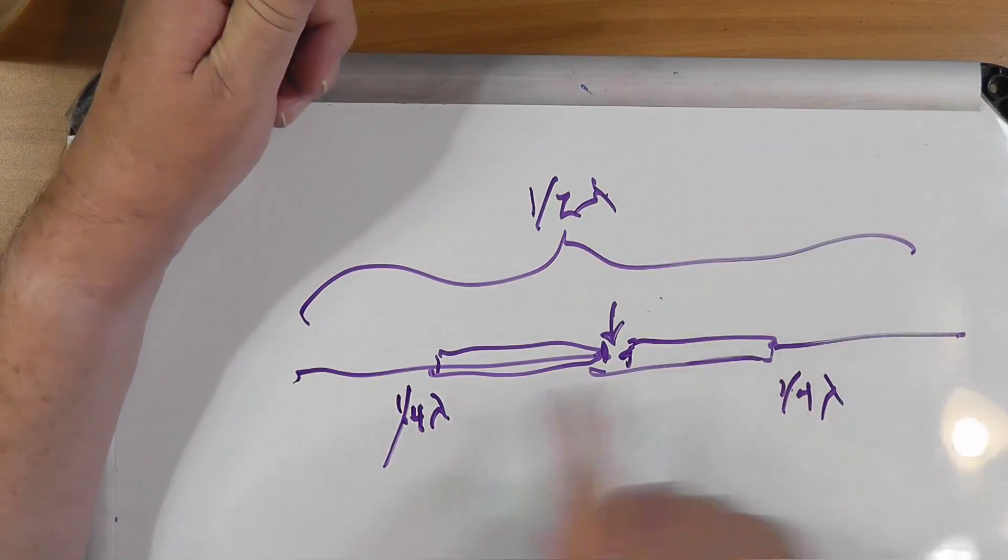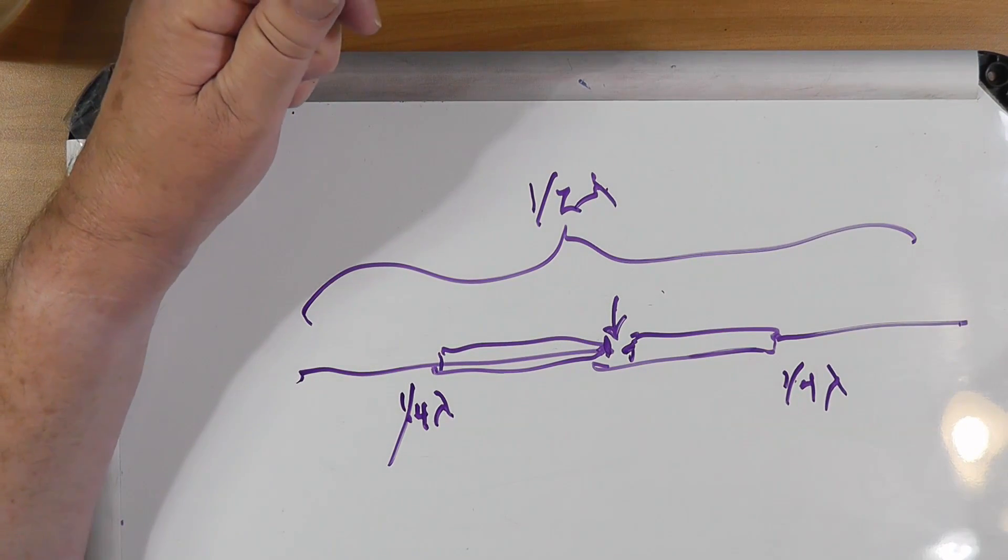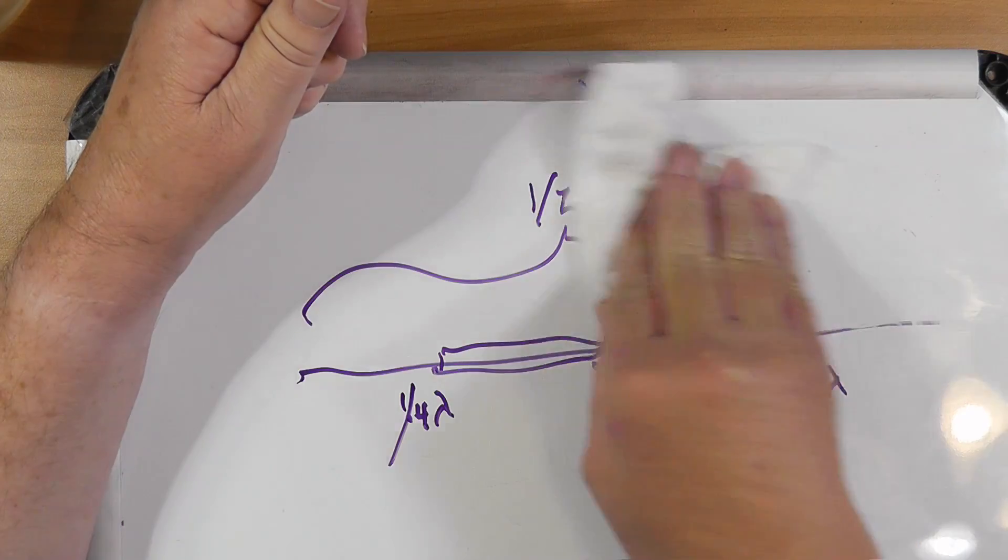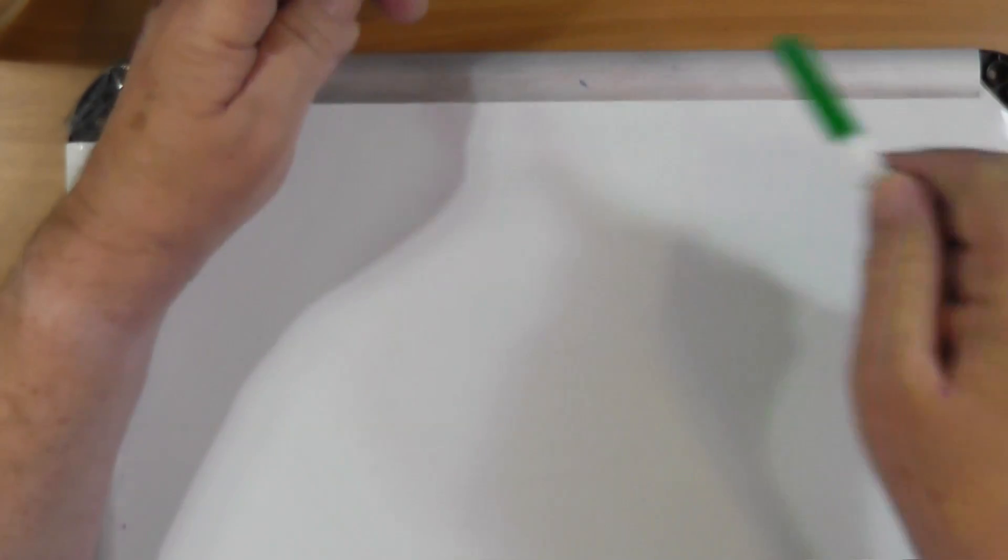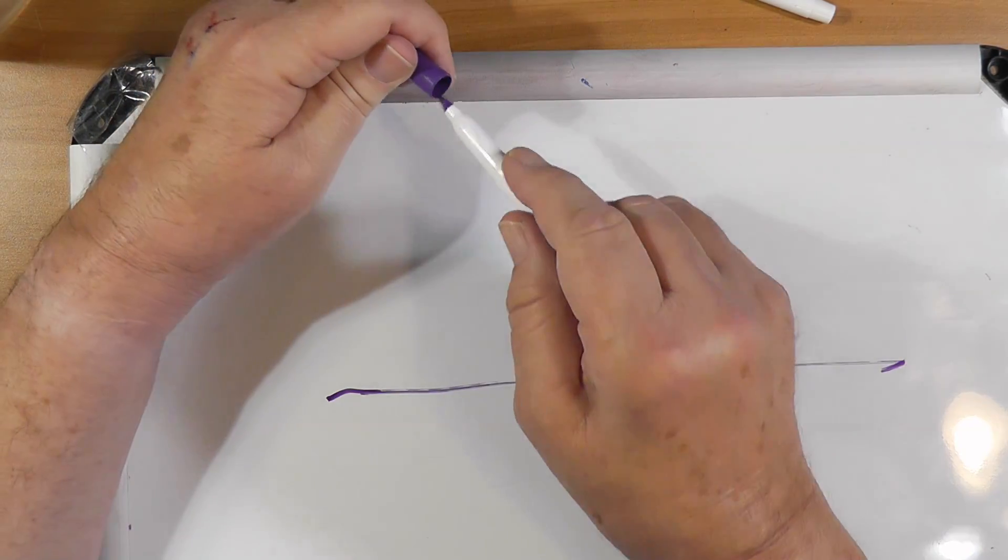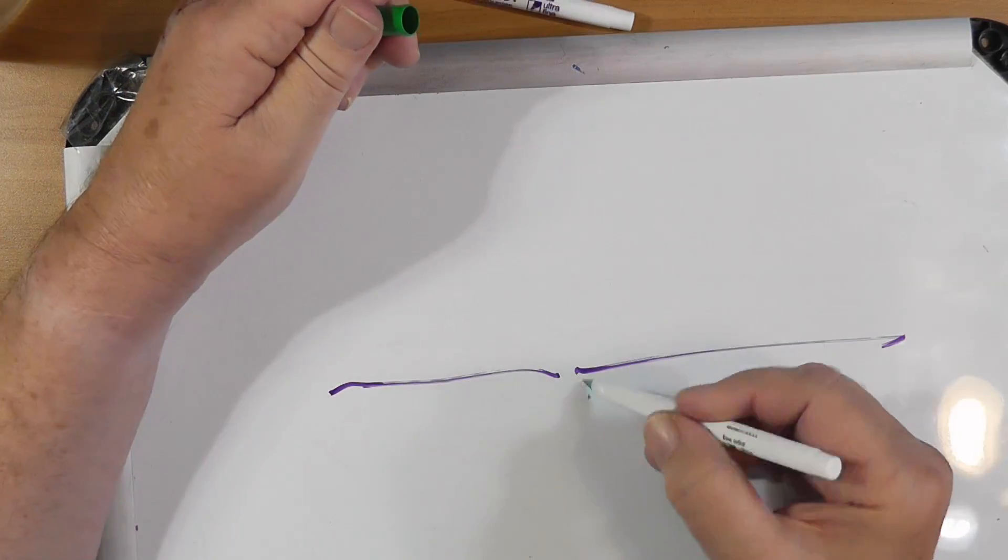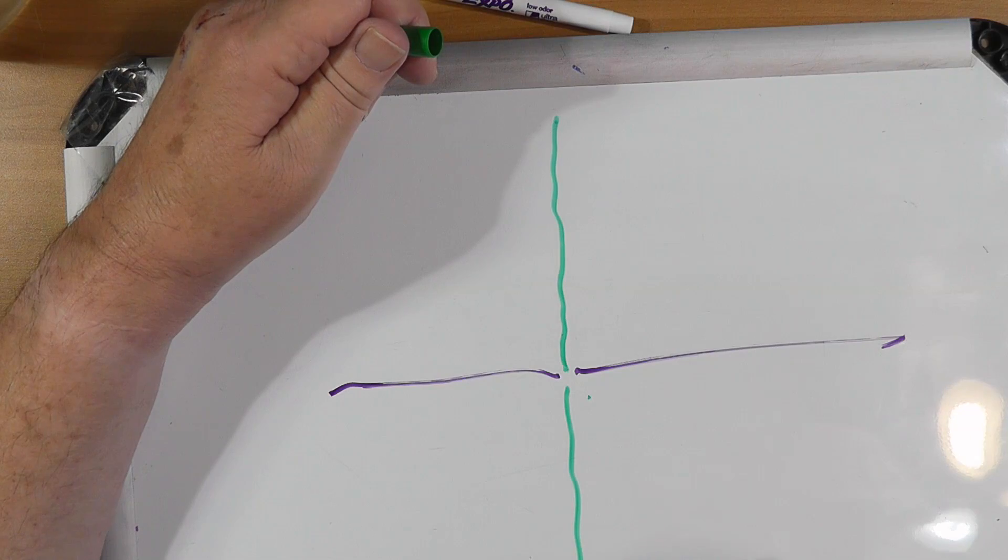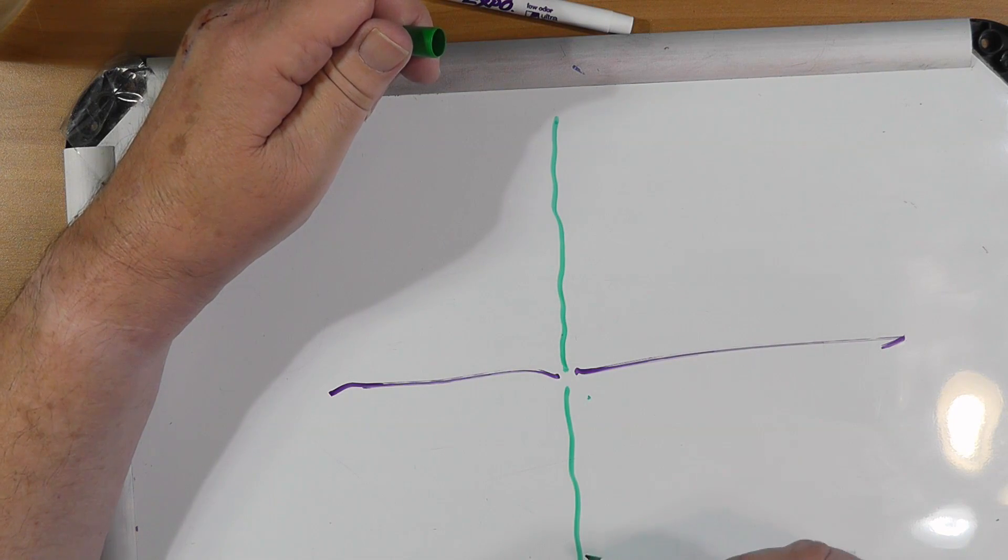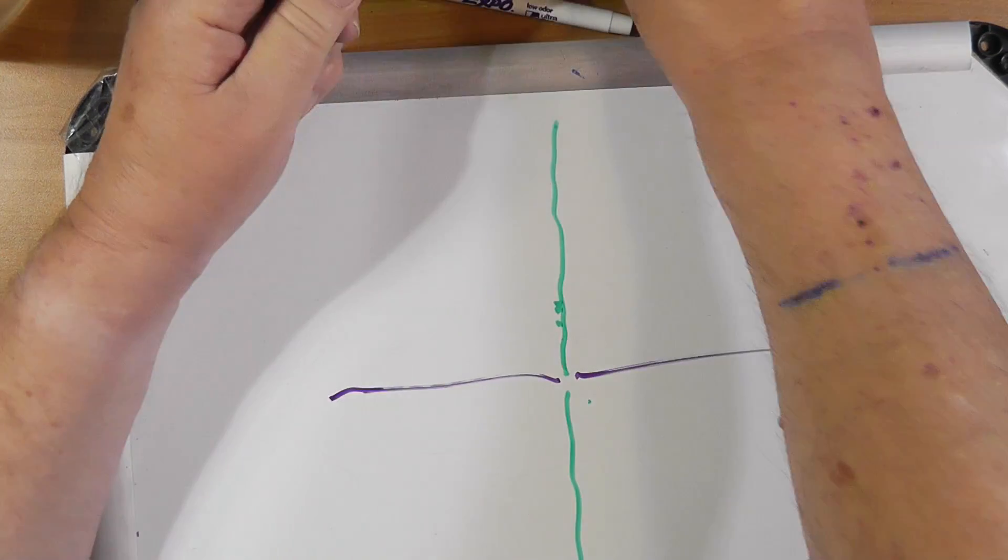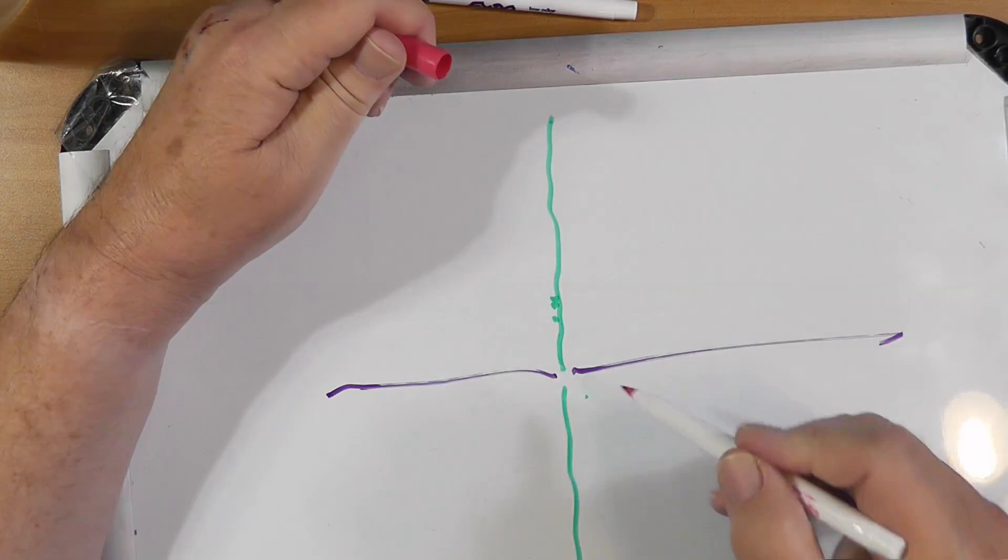MFJ has a thing where you can just put two of these back to back. Now, if you can put two of them back to back, why not make a fan dipole? So you have yours like this. Then you have another one like this. Now, they're the same size physically. Electrically, they're different because there's loading coils in these things.